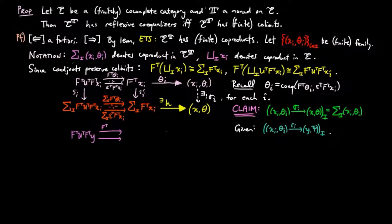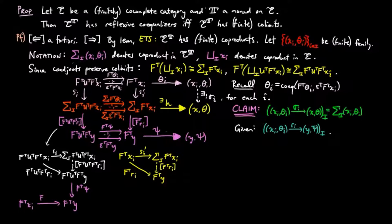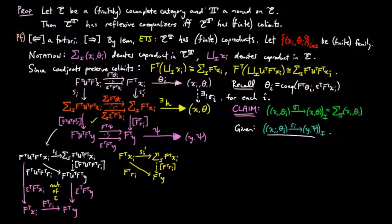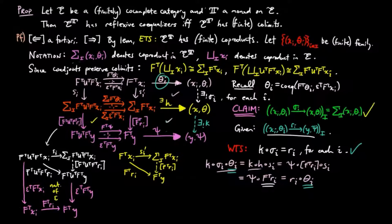If we are given another co-cone R_I, the morphisms [F_T U_T F_T R_I] and [F_T R_I] induced by the respective co-products make the bottom left square commute sequentially, since each R_I is T-equivariant and the co-unit ε is a natural transformation. Therefore, by the universal mapping property of H as a co-equalizer, there exists a unique morphism K such that K·H equals Σ·[F_T R_I]. We have K·Σ_I·θ_I equals K·H·S_I, which equals Ψ·[F_T R_I]·S_I, and this equals Ψ·F_T R_I. But F_T R_I is the morphism T·R_I, and thus equals R_I·θ_I since R_I is T-equivariant. Then since Σ_I is an epimorphism, as it is a co-equalizer, we have K·Σ_I equals R_I for each I, which is what we wanted to show and completes the proof.